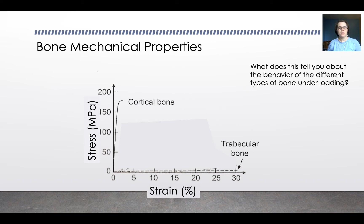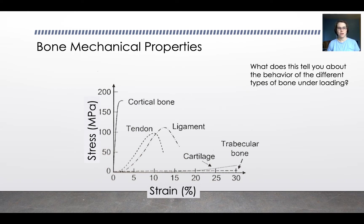For reference, here are the mechanical properties of tendon, ligament, and cartilage — the other primary musculoskeletal tissues. Tendon is kind of in between cortical bone and trabecular bone, though those are tension data, not compression data. Cartilage, which is also compression data, is similar to trabecular bone, but it has a very different structure, purpose, and role in the body.